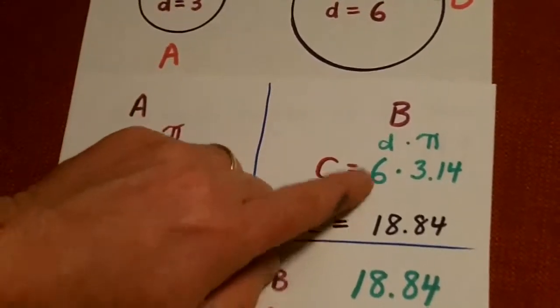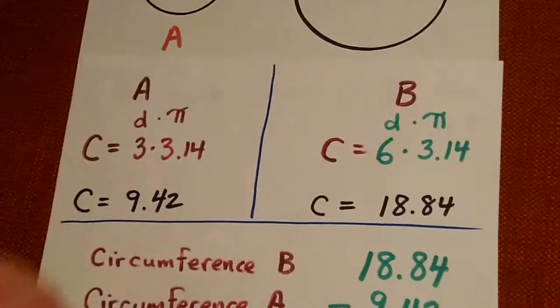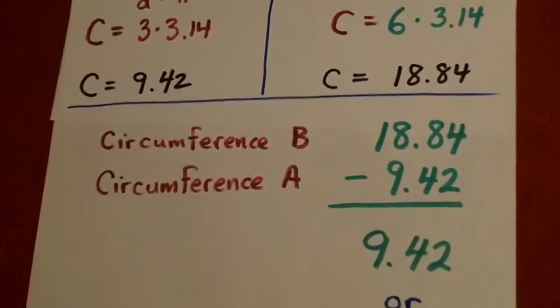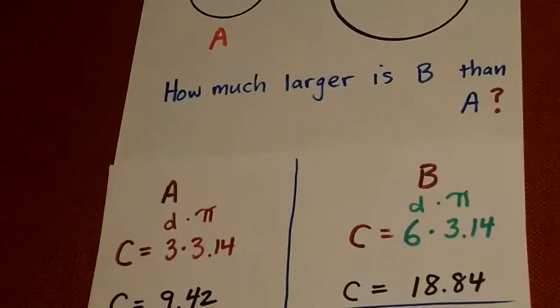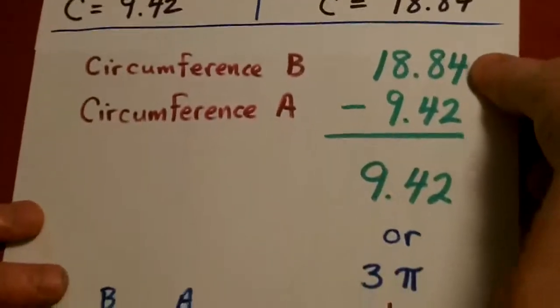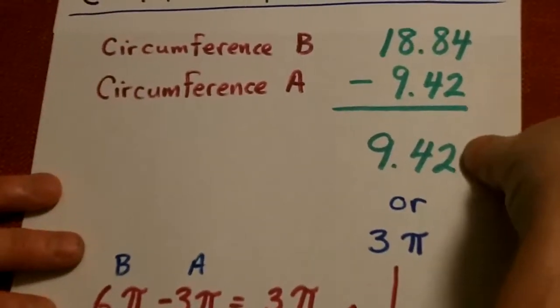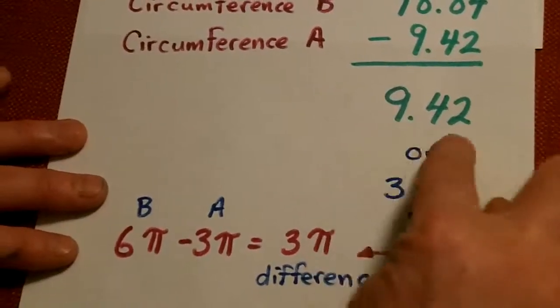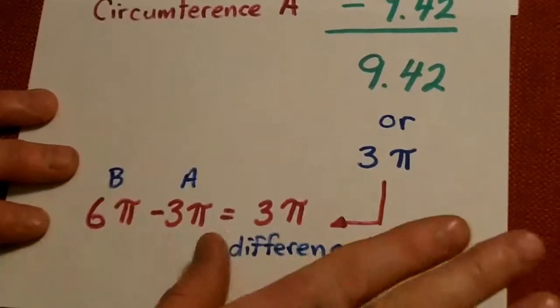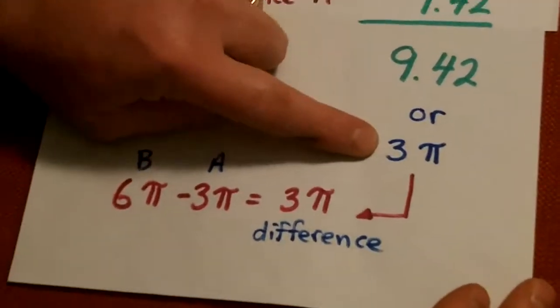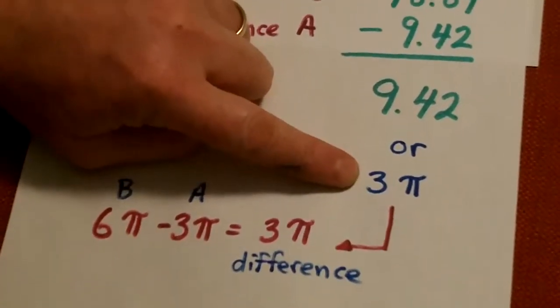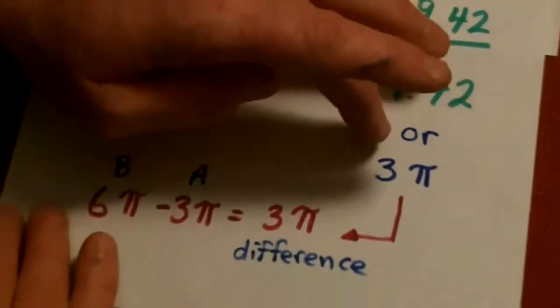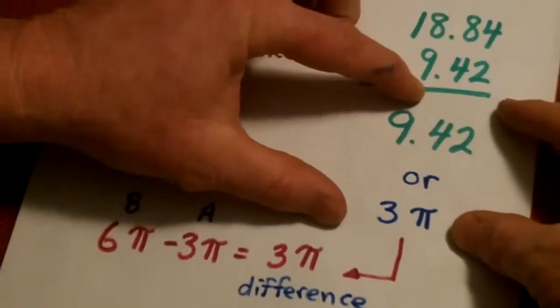Now, if B, it's 6 diameter times 3.14 pi. So, the circumference is 18.84. Now, the question is, how much larger is B than A? Well, how much larger? You take the big one minus the small one is equal to the difference, or the answer to the subtraction problem. Now, that 9.42, that could be the answer, but they might put the answer this way. They might put the answer as 3 pi. So, basically, this was 6 pi minus 3 pi is equal to 3 pi.